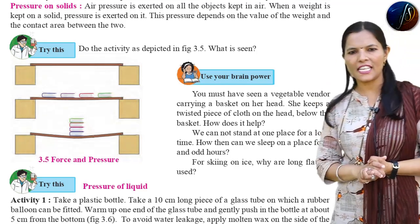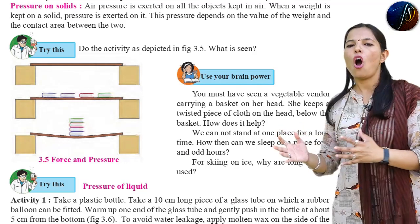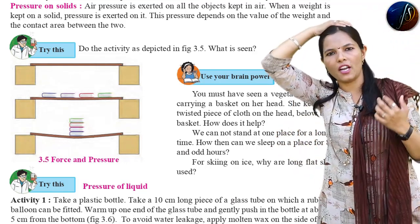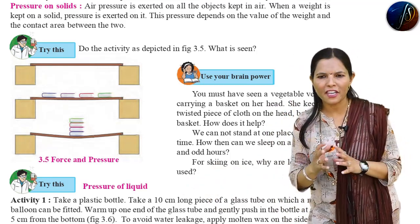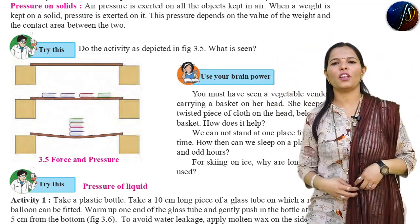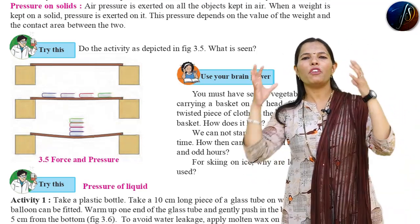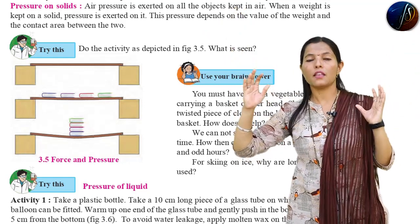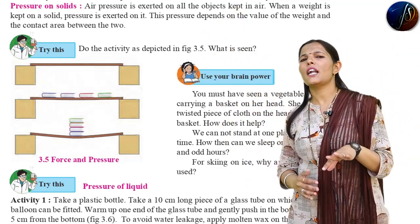The next question is: you must have seen a vegetable vendor carrying a basket on her head. She kept a twisted piece of cloth on her head. The bags are very big and very hard.